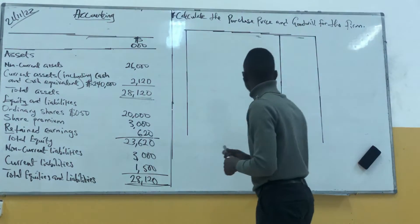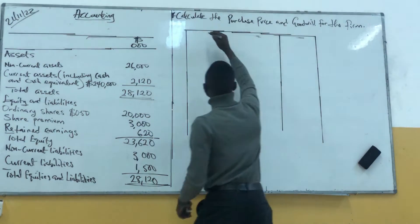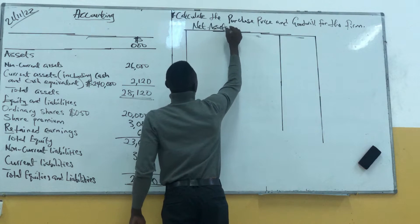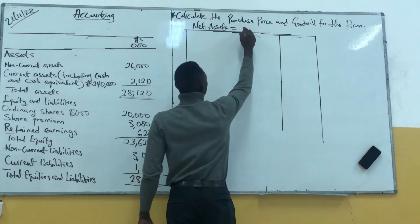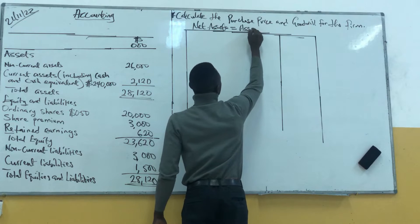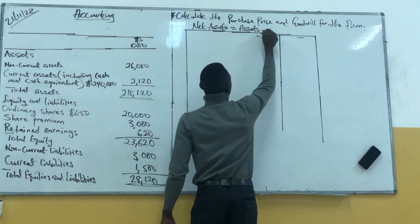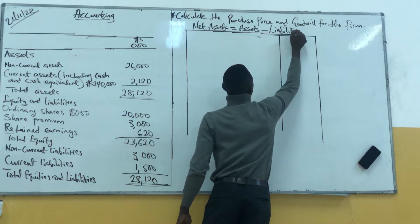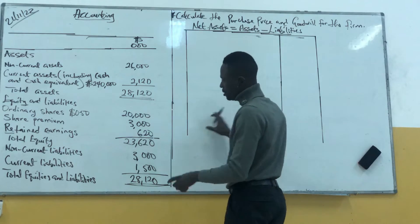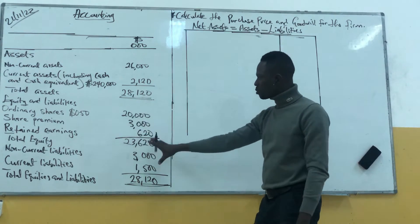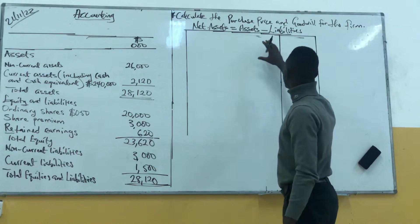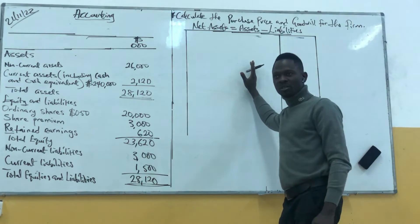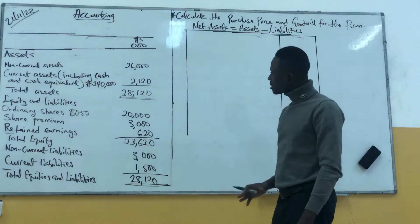So what are the net assets? We say net assets equals assets minus liabilities. So these items are all good — we use them to find our purchase price. And as soon as that is done, we find them. So let's start.